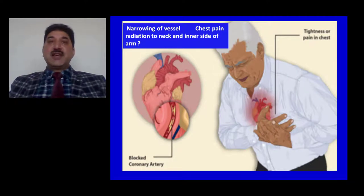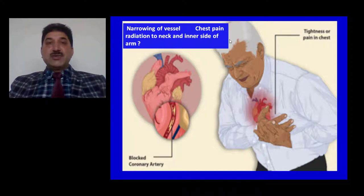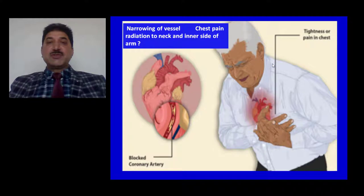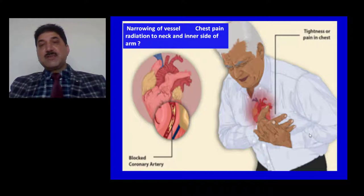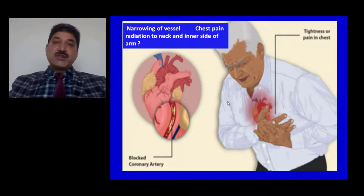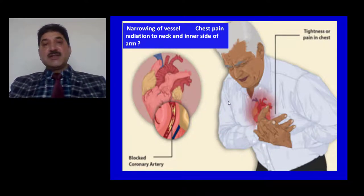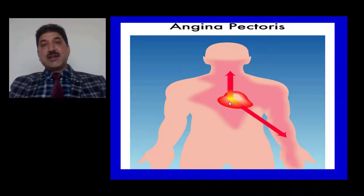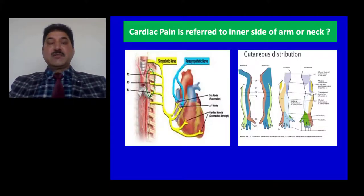What are the consequences of this narrowing or infarct? Distal to the obstruction, blood flow is reduced. There may be clot formation blocking the vessel, leading to ischemia, or there may be impaired blood flow distal to the obstruction. Ischemia gives chest pain, and this chest pain relates to the inner side of the arm, shoulder, and neck of the patient. As shown in this diagram, cardiac pain is referred to the inner side of the arm, shoulder, and neck. Why is cardiac pain radiated to the inner side of the arm, shoulder, and neck?